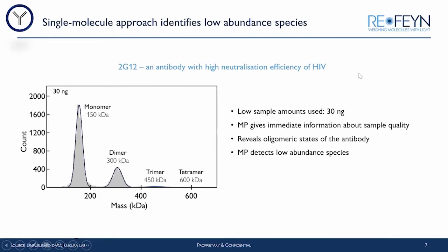Here we have 2G12, a HIV neutralizing antibody. Mass photometry can reveal the oligomeric states of this antibody preparation — we can see that it forms monomers, dimers, trimers, and tetramers in solution, all with a very small amount of sample. Because mass photometry is a single molecule technique, we are able to detect even low abundance species such as the tetramer, even in the presence of high abundance species like the monomer. Mass photometry gives us immediate information about sample quality — we can determine whether our antibody preparation is stable, assess purity, and evaluate whether there has been any degradation or aggregation.